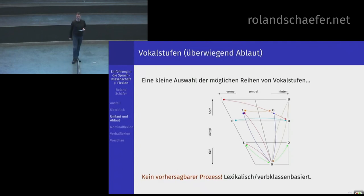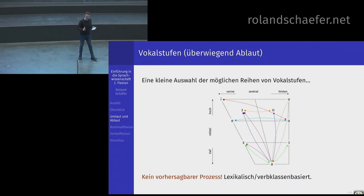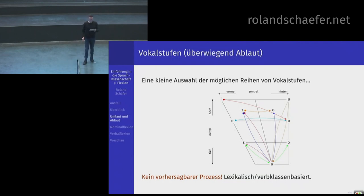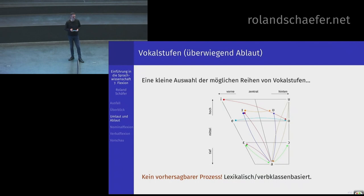Wenn Sie sich diese Auswahl von Reihen von Vokalstufen angucken, stellen Sie fest: da ist nicht so wirklich System drin, zumindest keins, was man so ohne weiteres erkennt. Wenn man das diachron betrachtet, gibt es Typen und Untertypen, aber im Wesentlichen gilt: Sie müssen für jedes starke Verb die Vokalstufen dazulernen. Da kann Ihnen niemand eine Regel geben, mit der Sie irgendwas anfangen können. Es ist im Grunde was ganz anderes als Umlaut – kein vorhersagbarer Prozess, das ist lexikalisch.